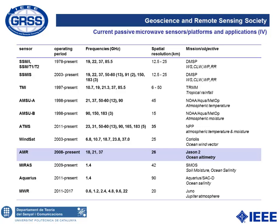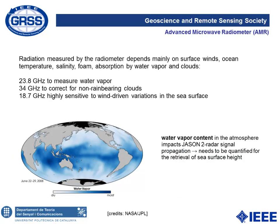The AMR is the radiometer on board the Jason-2 mission, which is devoted to ocean altimetry. The Jason-2 radar signal is affected by water vapor, clouds and variations in the sea surface, so the microwave radiometer is used to measure these three properties and mitigate their effect on the radar. The 23.8 GHz channel measures water vapor, 32 GHz corrects for cloud-only conditions, and 18.7 GHz corrects for wind-driven sea surface variations.